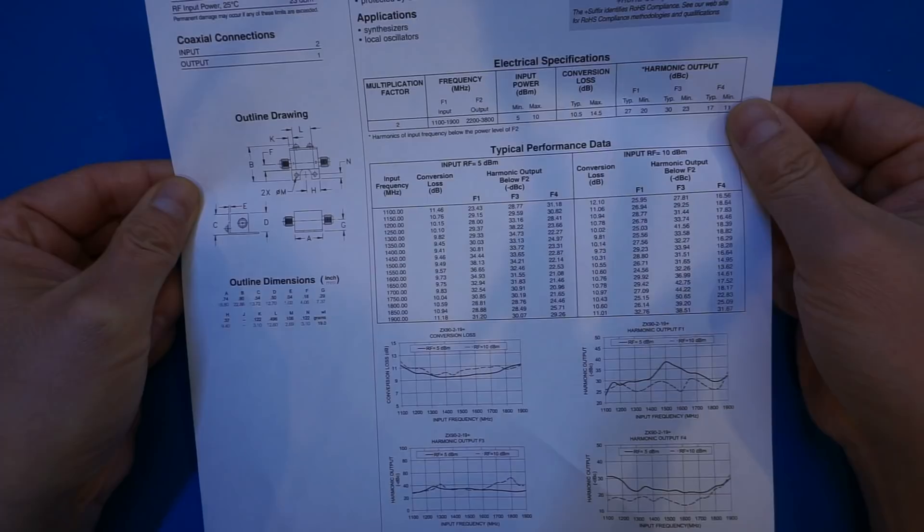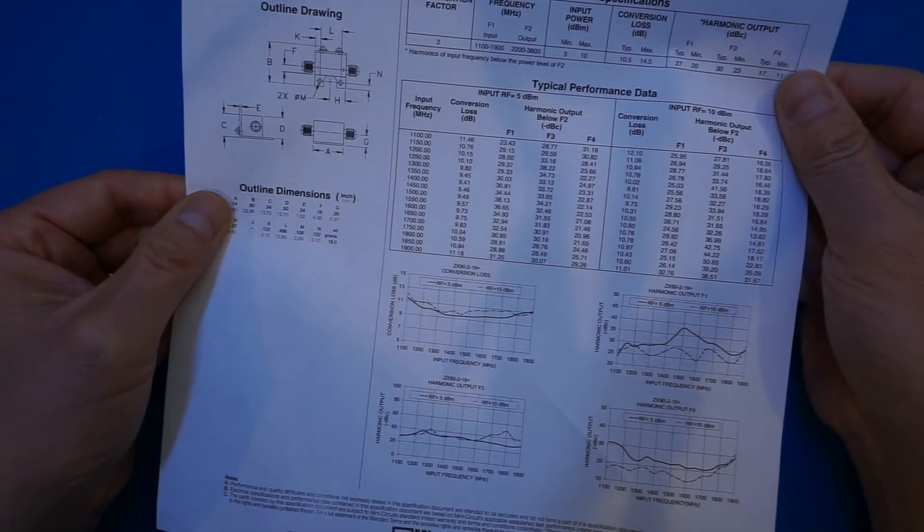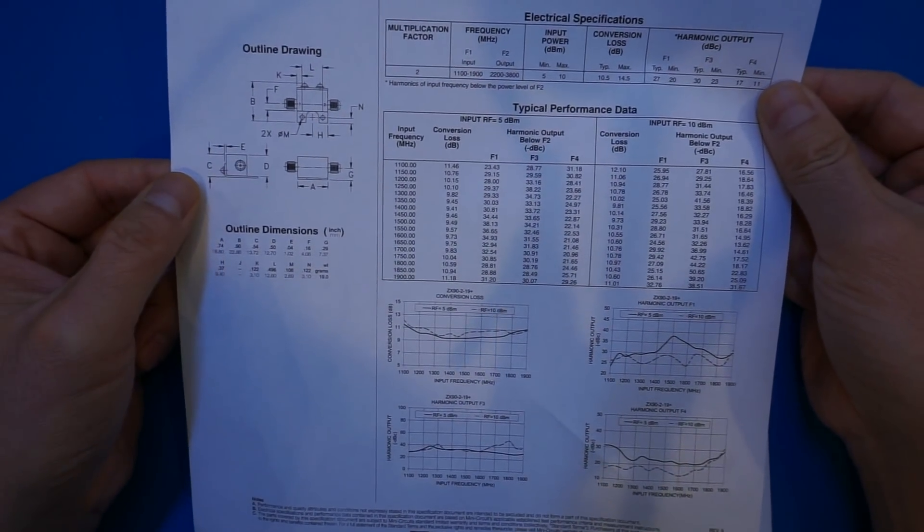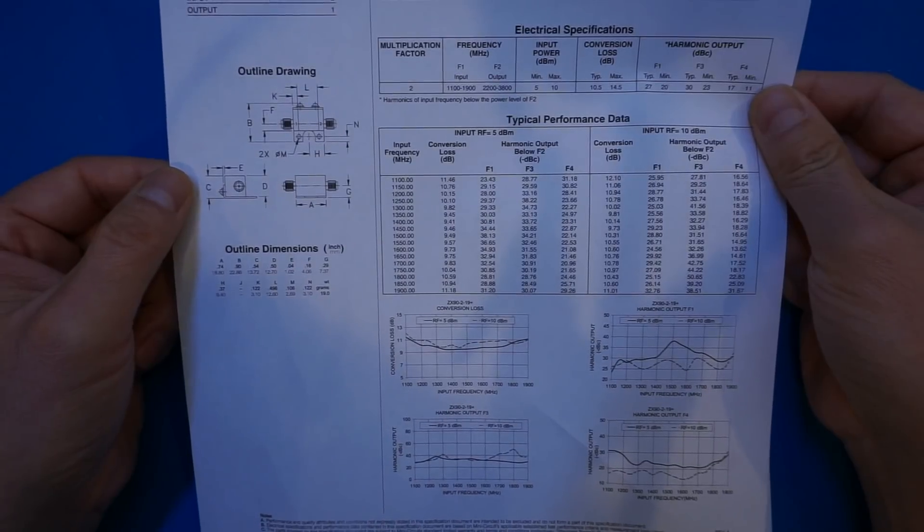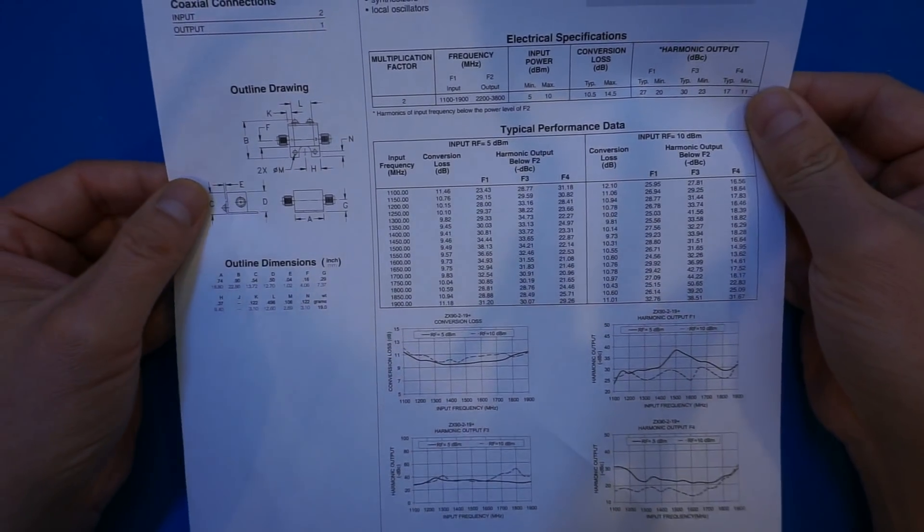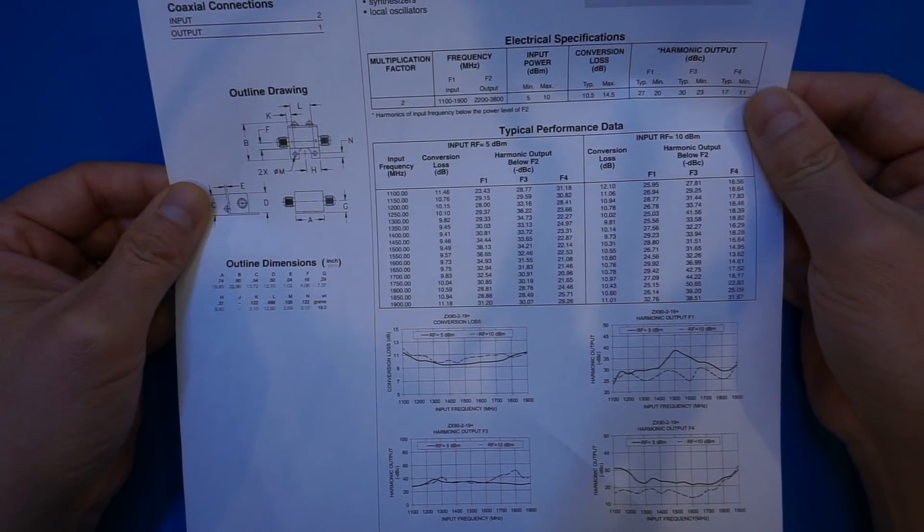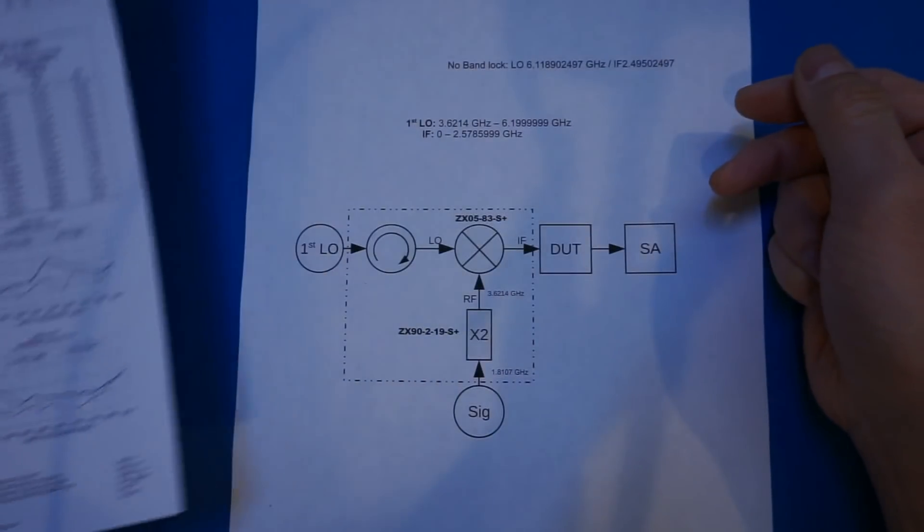So ideally, if you have a signal source that can output a stable 3.6214 GHz signal, you'd want to use that instead of using this frequency doubling approach. And that's what we are going to take a look at today.